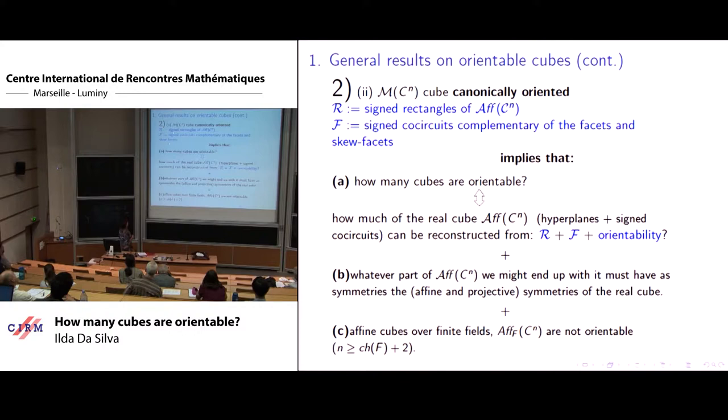So, the question how many cubes are orientable amounts to starting with these things, how much of the real cube hyperplane cell underlying matroids and orientation can we reconstruct from these three things: the signed rectangles, the signed facets, and just playing with orientability.